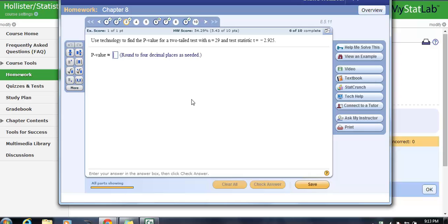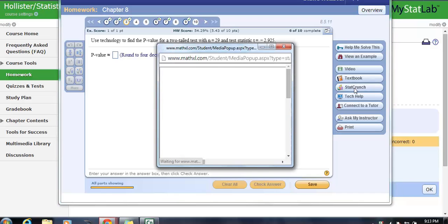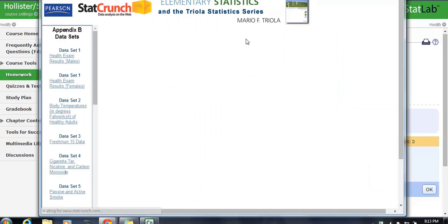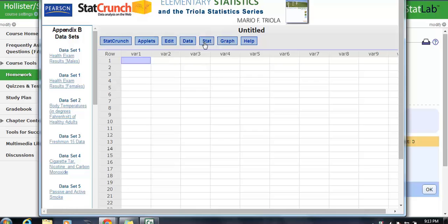It says use technology to find the p-value for a two-tailed test. n is 29, and the test statistic is negative 2.925. So we're going to click on StatCrunch, and we're going to go to our t-calculator.